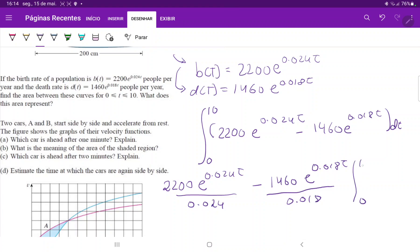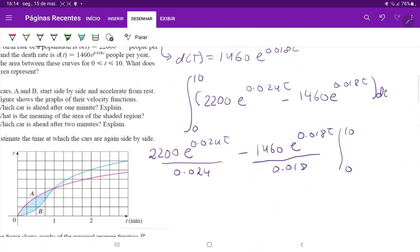and then all of this from 0 to 10. So let us plug in these values evaluated at these bounds. So 0.024 times 10, e to this power times 2200, then divided by 0.024. So that is 116531.17 minus 0.018 times 10, e to this power times 1460, divided by 0.018, minus 97107.